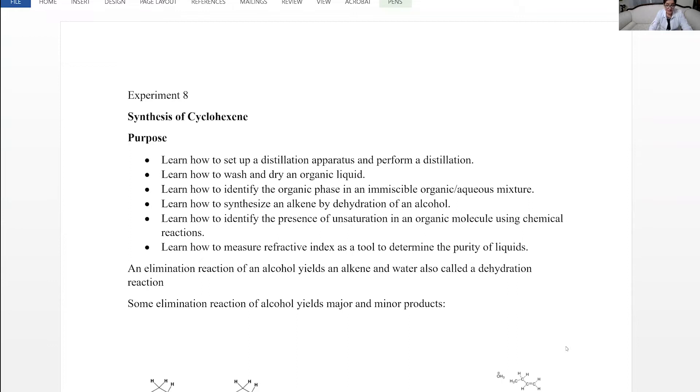We are going to synthesize cyclohexene which is an alkene. Alkene has C=C double bond functional group and to identify that bond we would do chemical tests: bromine test for unsaturation and permanganate test, also called Baeyer's test, which shows the compound has C=C double bond.